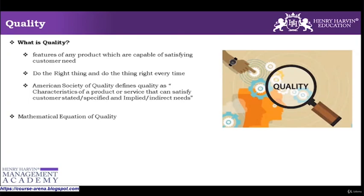There is a mathematical equation of quality: quality equals performance divided by expectation. If my performance is better than expectation, it's a delight. If quality equals one, I'm meeting the customer requirement. If my quality is greater than one — meaning I've outperformed the customer's expectations — my quality becomes more than a hundred percent. That's what quality is all about: always focusing on giving customers what they're looking for.